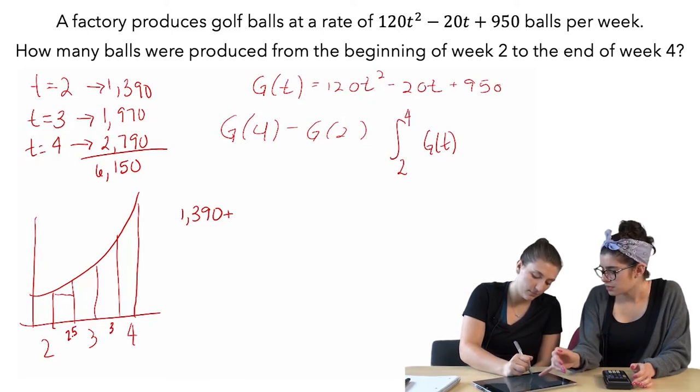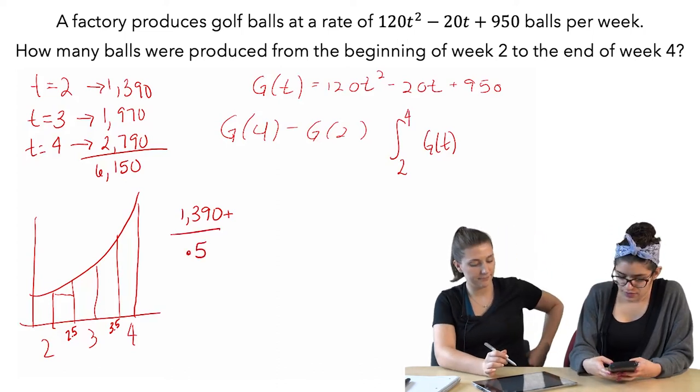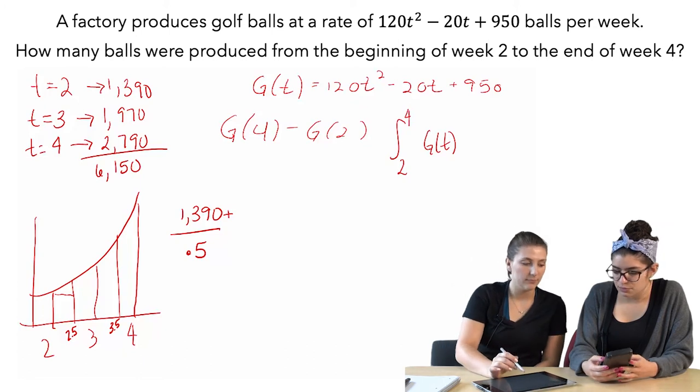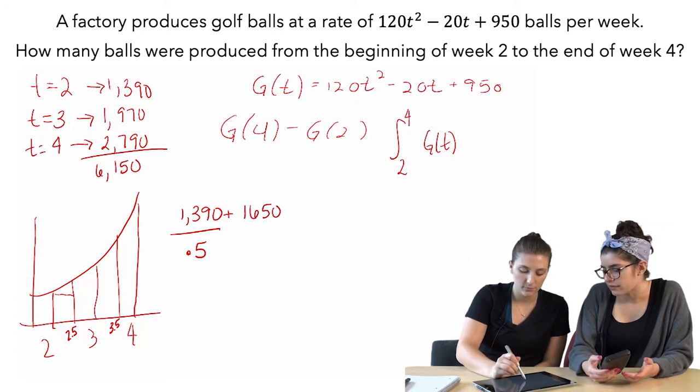So you have to put that over 0.5. Okay. And then for 2.5 it would be 1,650 over 0.5 again.